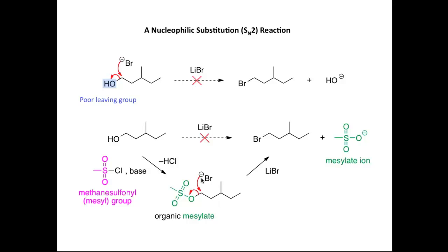So Br- can attack the carbon bonded to the oxygen and kick out the mesylate ion as a leaving group. The mechanism is an SN2 process — we attack at the same time as we lose the leaving group. This is a way in which we can achieve an SN2 reaction of an alcohol by converting it into a good leaving group, namely a mesylate group.